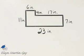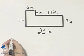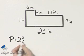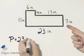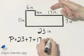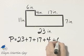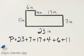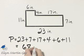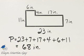And now we can find the perimeter. Perimeter is simply distance around. So the perimeter here will be 23 plus 7 plus 17 plus 4 plus 6 plus 11. If you find that sum, it is 68, so the perimeter is 68 inches.